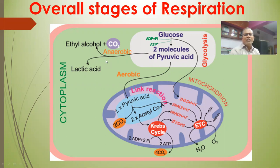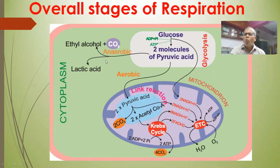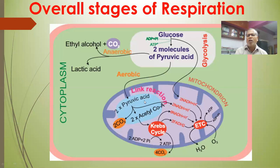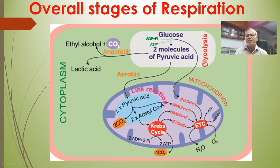I'd like to give a brief idea about respiration — the overall stages of respiration. Aerobic respiration has four stages, namely glycolysis, link reaction (oxidative decarboxylation of pyruvic acid), Krebs cycle, and electron transport chain or oxidative phosphorylation. The first step, glycolysis, takes place in the cytoplasm. The remaining three stages take place in the mitochondria.